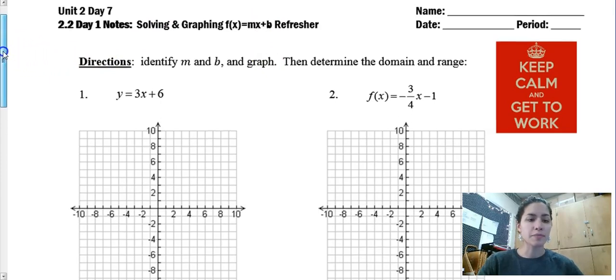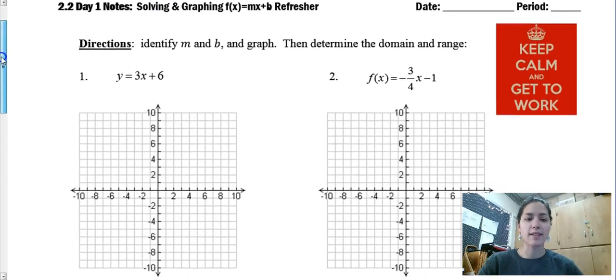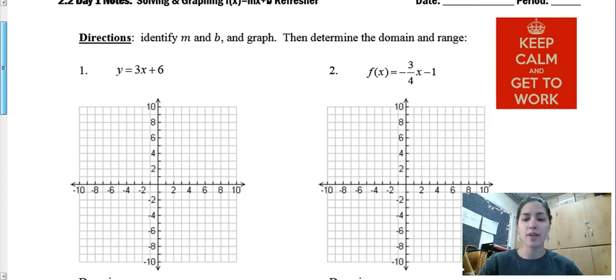Let's get right into number one. It says directions, identify m and b and graph, then determine the domain and range. So on the board today we were working on our unit 2 slope notes and we updated it with information about slope intercept form.